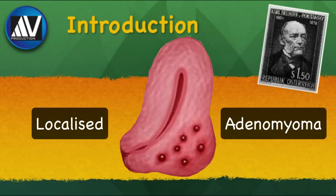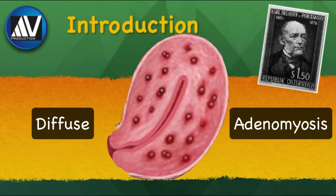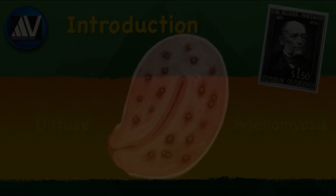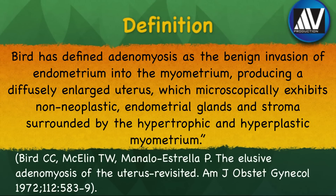When the extension is a circumscribed lesion, the nodule form is called an adenomyoma, and when the extension is diffuse, invading the entire uterus, it is called adenomyosis. Bird has defined adenomyosis as the benign invasion of the endometrium into the myometrium, producing a diffusely enlarged uterus which microscopically exhibits non-neoplastic endometrial glands and stroma surrounded by the hypertrophic and hyperplastic myometrium.